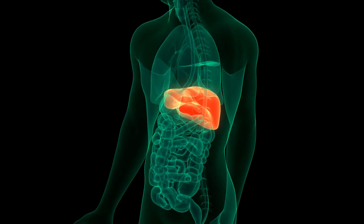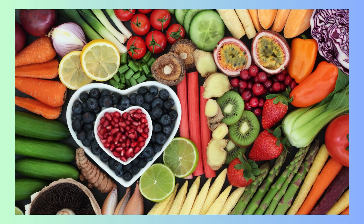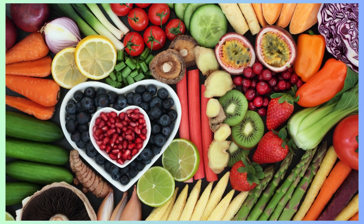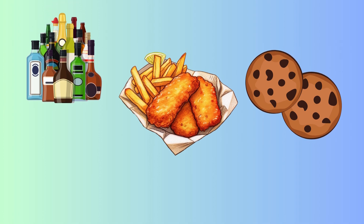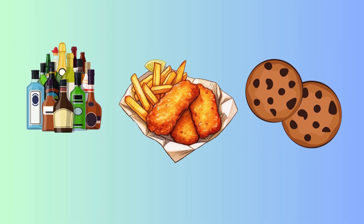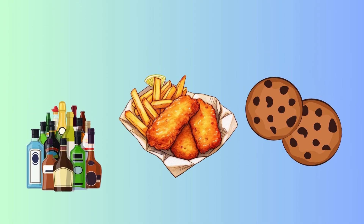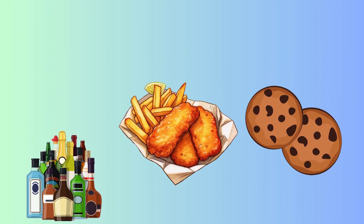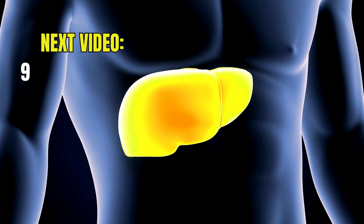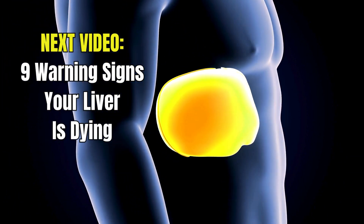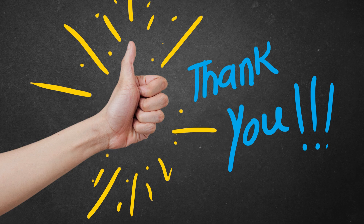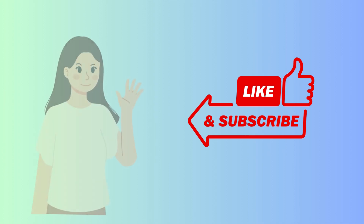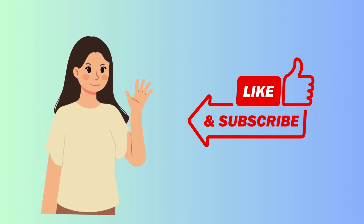Keeping our liver healthy involves smart choices about what we eat and drink. If you're concerned you might be over-consuming alcohol, omega-6 oils, or sweeteners, watch the next video on 9 Warning Signs Your Liver Is Dying. Thank you for watching 3 Main Causes of Fatty Liver on Healthy Vibrance. Don't forget to like, subscribe, and turn on notifications for more health-related content.